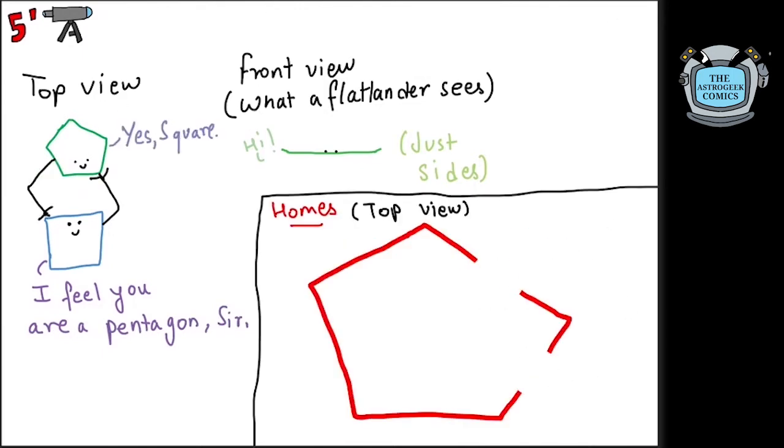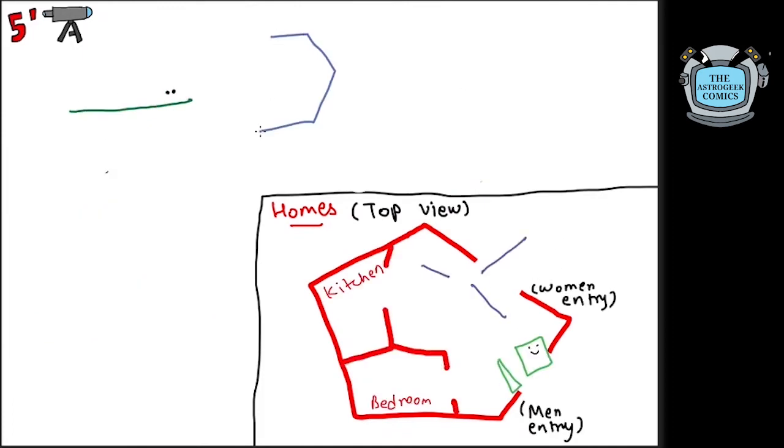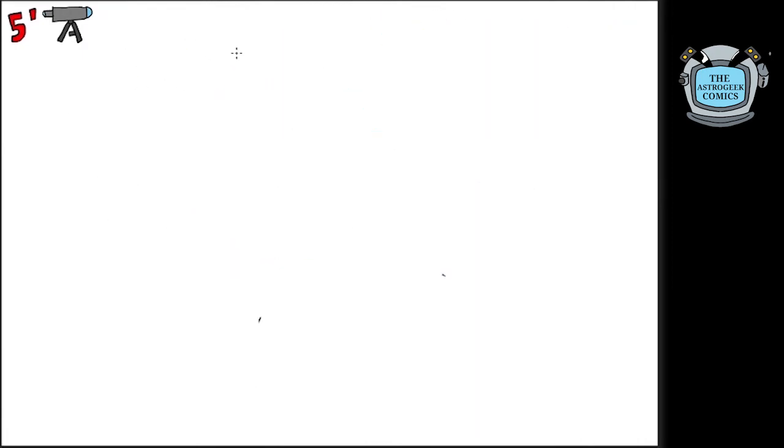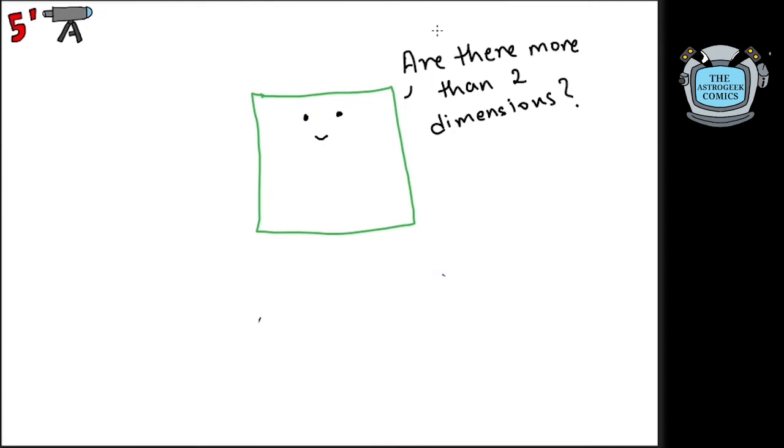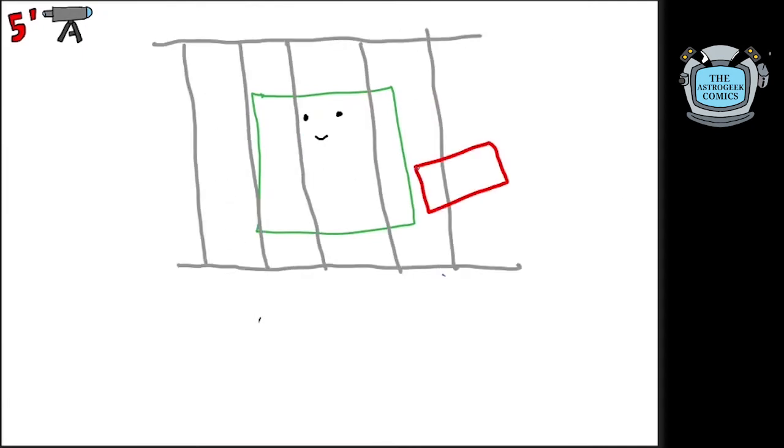People live in pentagonal houses with separate doors for men and women. Because since women are lines, they have two pointy edges that can kill someone. It is forbidden for the beings of Flatland to attain higher knowledge or talk about higher dimensions or question some worldly facts.